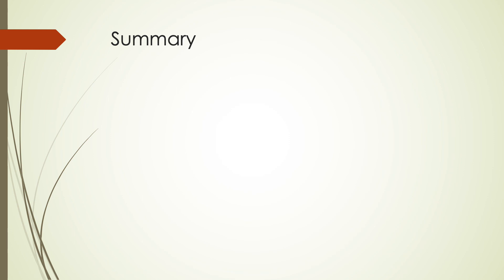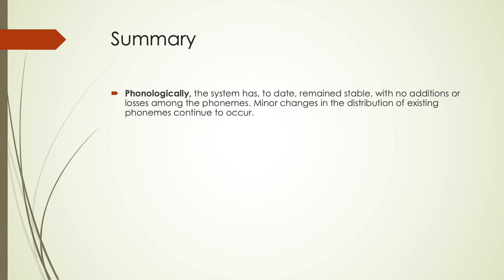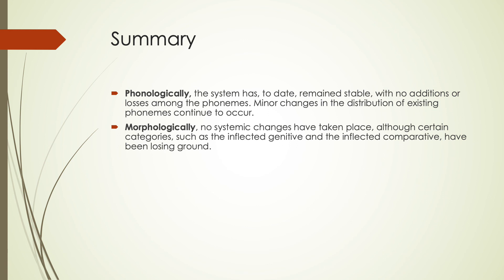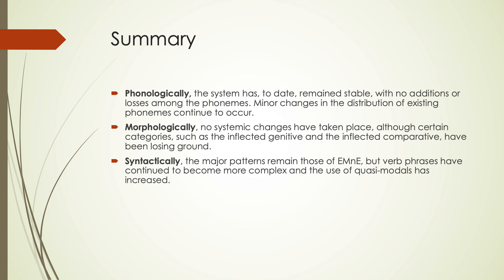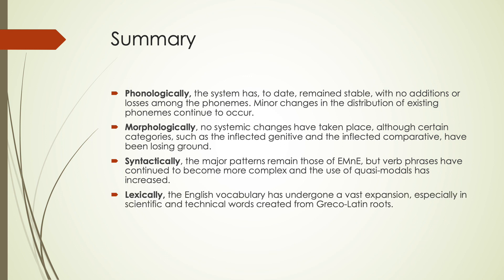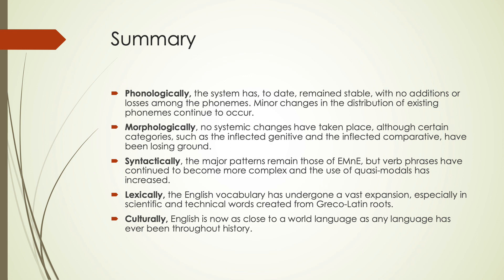To summarize everything for this modern English time period: phonologically, we've had a pretty stable sound system — we haven't really added or lost phonemes, just a few minor changes in distribution of existing ones. Morphologically, there haven't been any major systemic changes, but there have been some category changes and some continued loss of inflectional things in favor of phrasal components. Syntactically, most has remained the same from early modern English, with some verb phrases continuing to become more complex. Lexically, we're vastly expanding our lexicon, adding words constantly with scientific and technical words coming mostly from Greco-Latin roots. Culturally, English is now as close to a world language as any language has ever been — more so even than Latin at its peak.